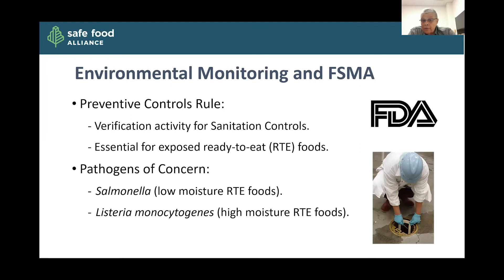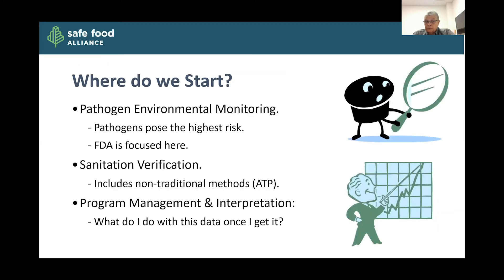We live in the age of FSMA — the Food Safety Modernization Act — and environmental monitoring plays a key role in that. It is a verification activity for your sanitation controls and an essential component of your plan for exposed, ready-to-eat foods under the preventive controls rule. The expectation is that you will be looking to make sure that environment stays hygienic as food is exposed prior to final packaging. Pathogens of concern under FSMA include salmonella in low-moisture ready-to-eat foods and Listeria monocytogenes in high-moisture ready-to-eat foods. FDA is very focused on pathogens as their primary concern.